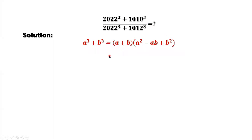In the denominator, can we use this formula? If we use this formula, what is A? A is the same as 2022. What is B? B is 1012, which is different from the numerator. If we use this formula at the same time for the numerator and the denominator, we cannot simplify this expression because we have different B values.